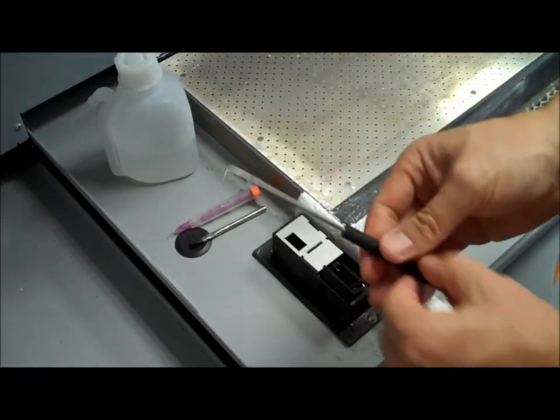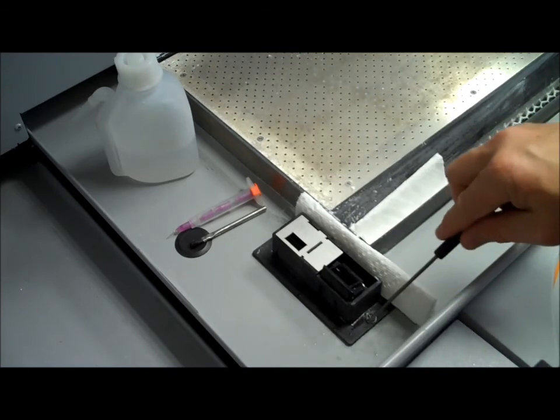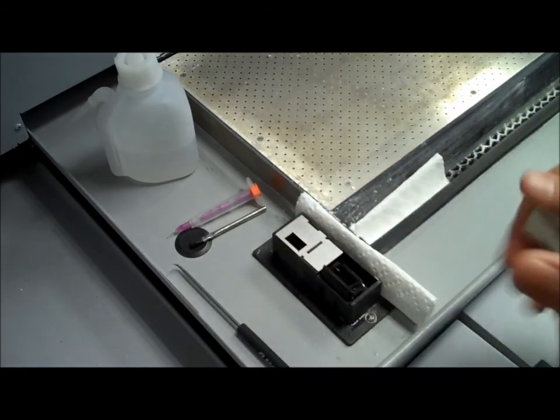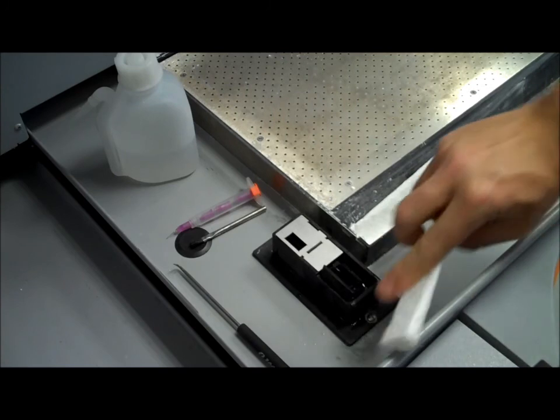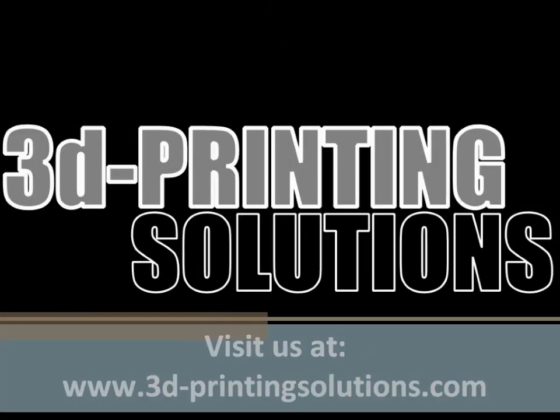Now if there was any powder in there that was hard to get out, you can use the pick but use it very gently. You can also use it to clean up the sides and down around the bottom where it's tough to get in with a brush. Again, this is to be done every time you finish a build. All right. Thank you.